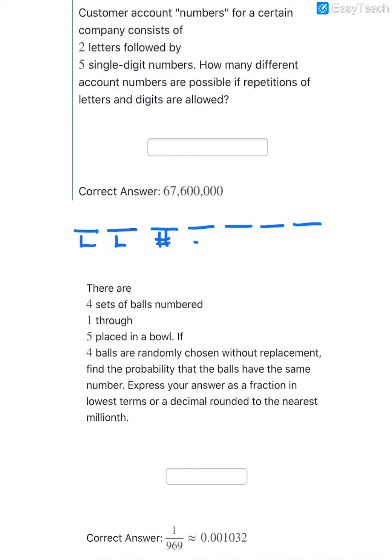These are all numbers here. They want to know how many different account numbers are possible if repetitions of letters and digits are allowed. So that's important to pay attention to. Starting with the first letter, there are 26 different letters to choose from in the alphabet. Since they tell me that repetition is allowed, there would also be 26 choices for the second slot.